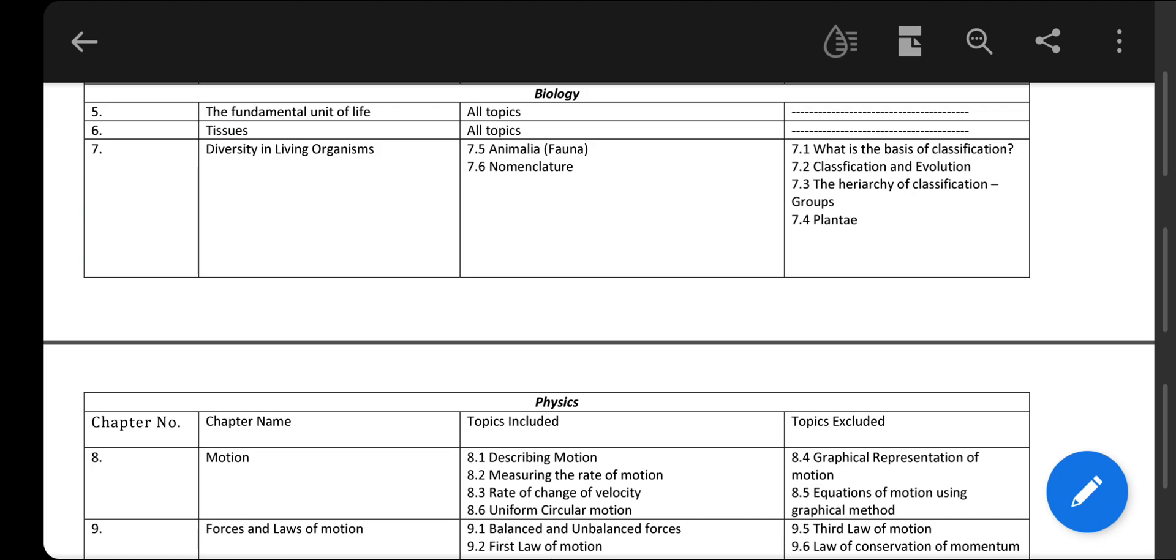Coming to the third chapter of biology, Diversity in Living Organisms, a very lengthy chapter, only two topics you have to study: Animalia, that is the animal kingdom whole, and nomenclature, which means how organisms are named differently.